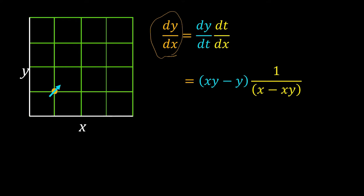dy/dx is equal to dy/dt times dt/dx. Therefore, from our system of ODEs, we can write (xy - y) times 1/(x - xy). dy/dx gives the slope of the arrow. But what would be the direction of the arrowhead?